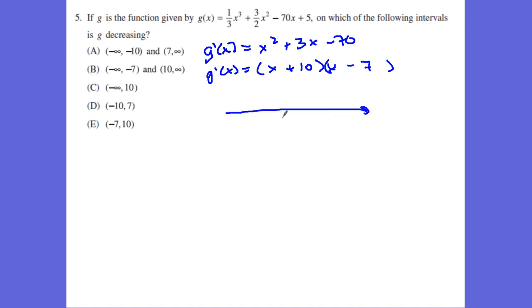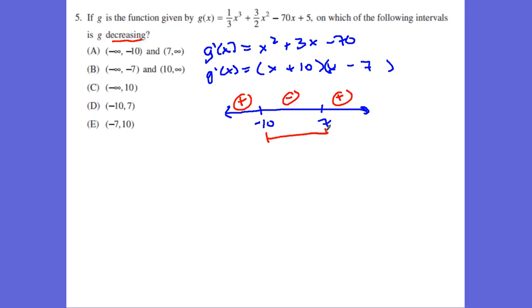Just like with my first derivative test, I want to take a look at negative 10 and positive 7, and plug in some values. Plugging in values lower than negative 10, I get positive values. If I plug in 0, I get a negative value. And if I plug in numbers bigger than 7, I get another positive value. So the function is decreasing only from negative 10 to 7, which is answer D.